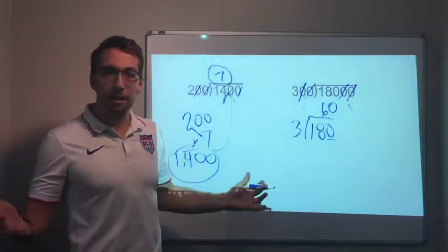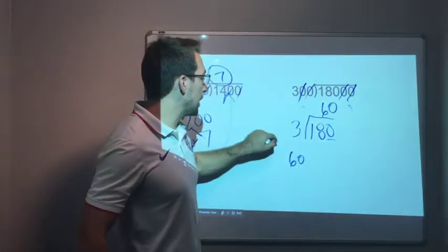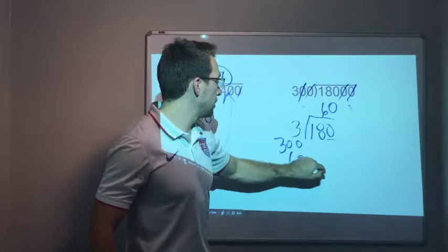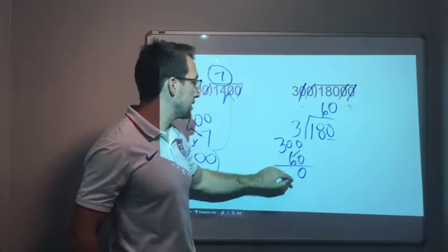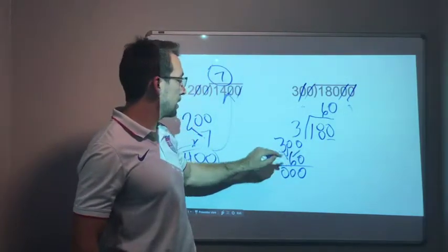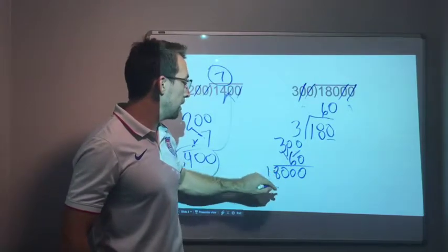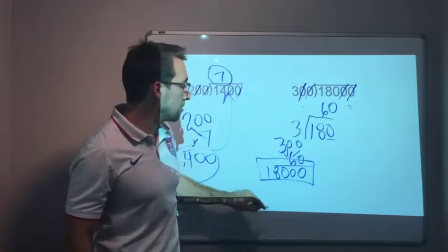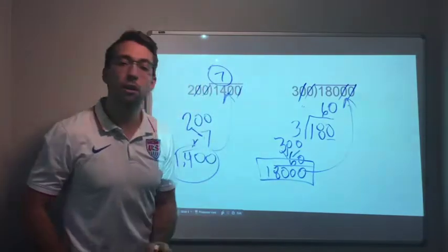18 divided by 3 is 6, we have one zero, so 60. 60 is my answer. 60 times 300, let's look at this. Zero, and six times zero is zero, six times zero is zero, six times three is 18. 18,000 is the number that I started with originally.